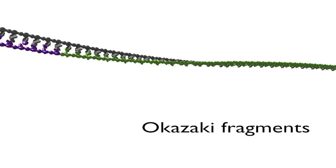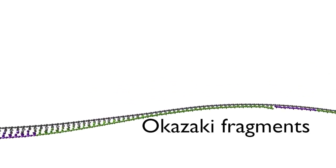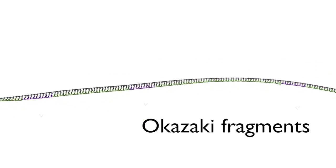The short stretches of DNA that are made on the lagging strand are called Okazaki fragments after their discoverer. During the course of replication, these fragments are stitched together.